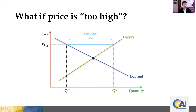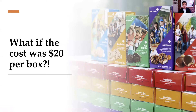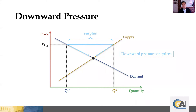This surplus can be a situation where there's all this inventory that can't be sold because the price is too high. As a hypothetical, what if the cost of a Girl Scout cookie box was $20? Some would still be sold, but we would expect a lot of unsold inventory. The following year, they would probably adjust and you would see a downward pressure on prices as this unsold surplus is quite wasteful. The opposite of a price ceiling is a price floor, which means you can't go below that price — agricultural price supports are an example of that.